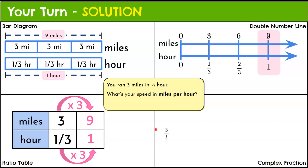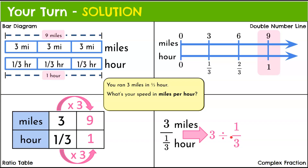Finally, the complex fraction: three miles divided by one-third of an hour. We rewrite this as a division problem — three divided by one-third. Change division to multiplication and multiply by the reciprocal, flipping one-third to three. So three multiplied by three equals nine, giving us nine miles per hour for the fourth time.